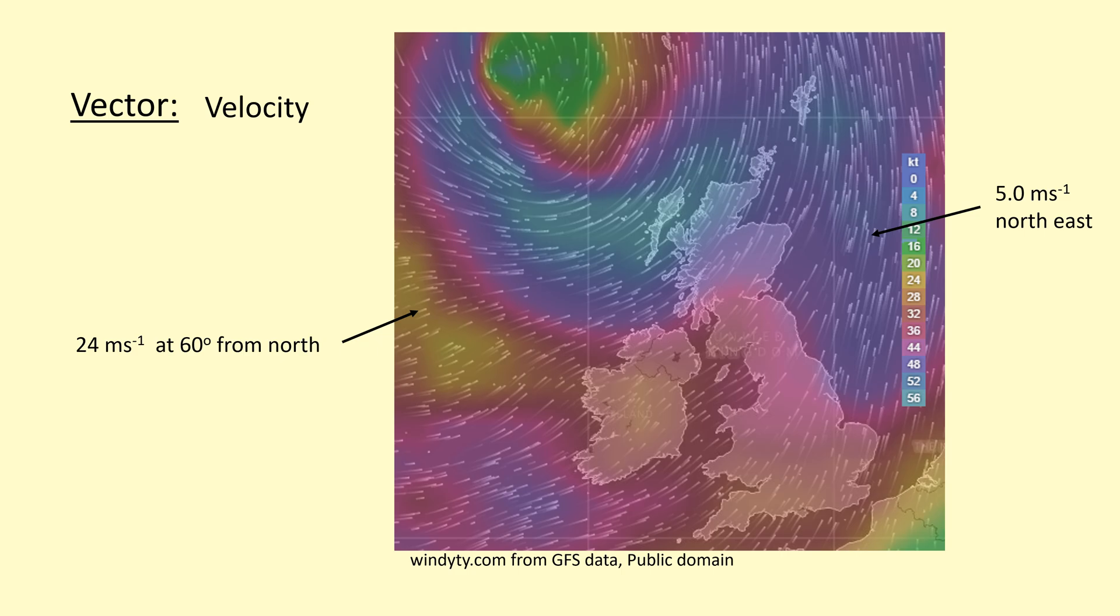For example here it's 24 meters per second so the arrow would be longer to indicate that the magnitude of the wind speed is larger but also gives a direction. You can give the direction in many ways, you don't have to use north east, you can use left right bottom and so on, you can also use angles as well.